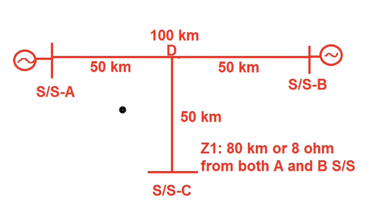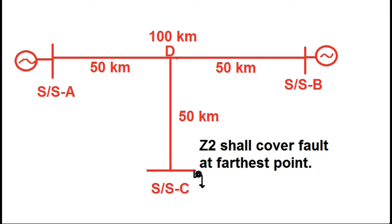Zone 1 is set at 80% of the line length — 80 kilometers or 8 ohm — from both ends of the substation. Now consider a bus fault occurring at substation C, the furthest point of the tee feeder. Zone 2 from each substation — A and B — must cover the far-end fault within this tee section, that is the fault at substation C.